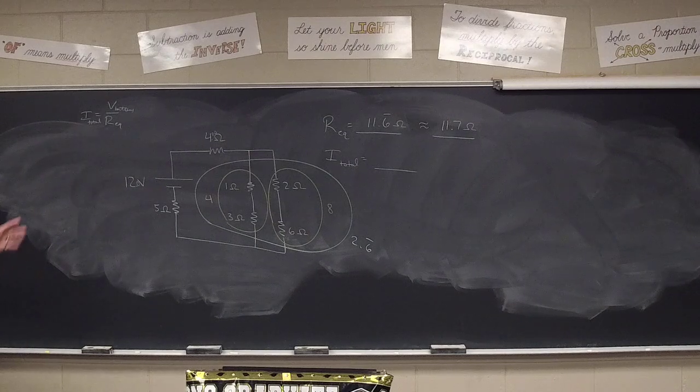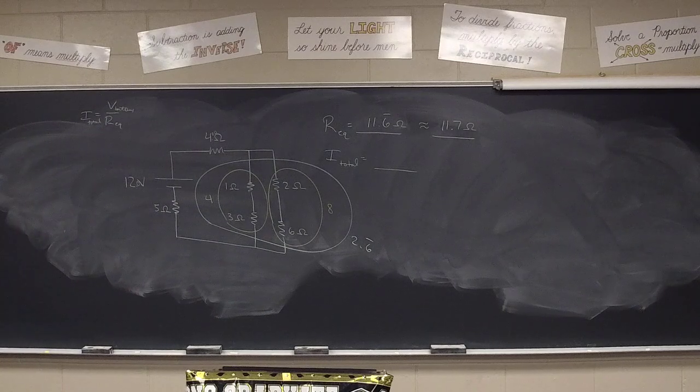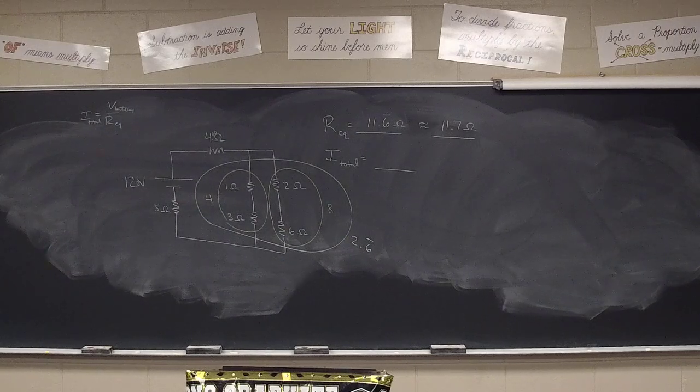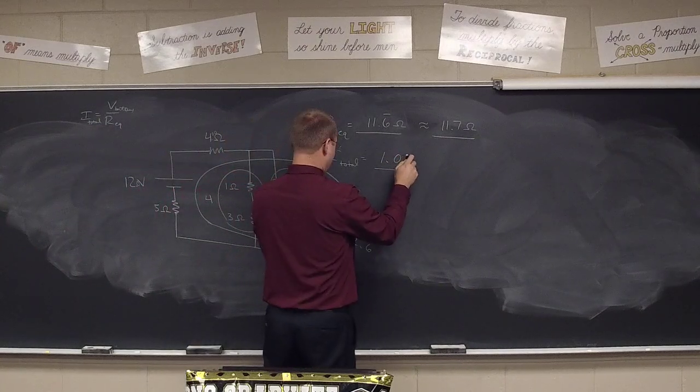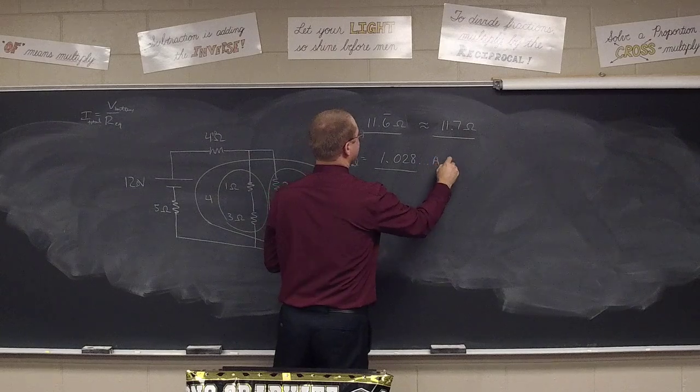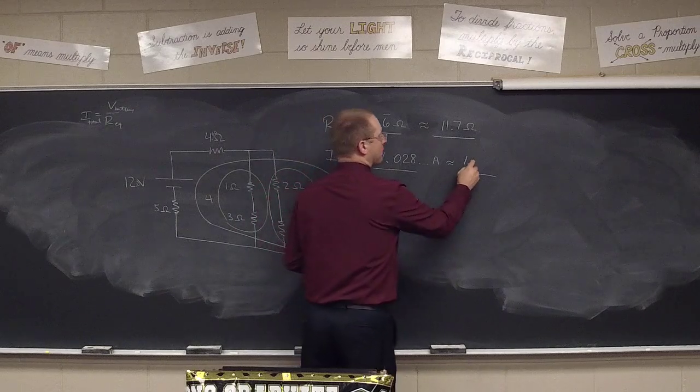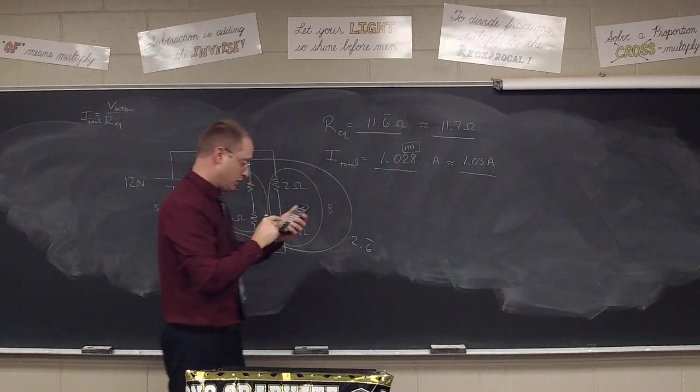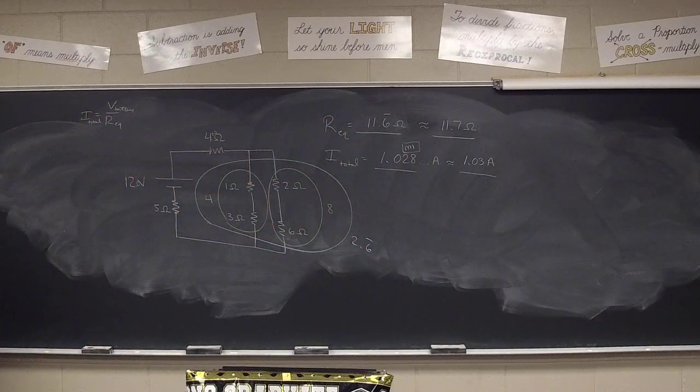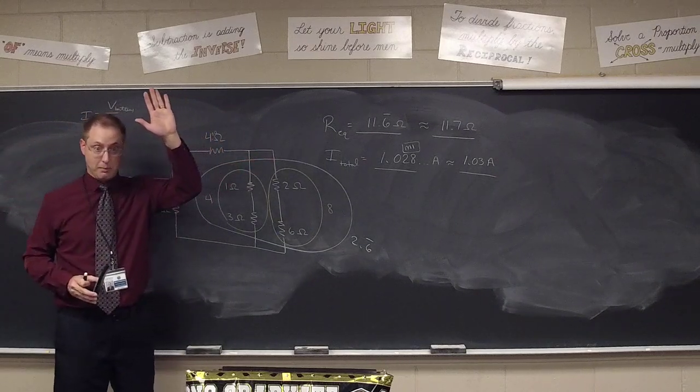Ohm's law, V equals IR, so I equals V over R. We're looking at the voltage that the battery provides divided by the equivalent resistance tells us the total current that we're able to get out of this circuit. And when we divide, it's not going to be much, right? I mean, we have 12 volts, we have almost 12 ohms, so it's going to be just barely over a single amp. Rounded 1.0, well, it's 1.028 blah blah blah amps. If we had happened to have three sig figs, we'd say 1.03 amps. But we would use this number in our calculations. I'm going to put that in my memory.